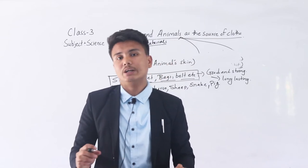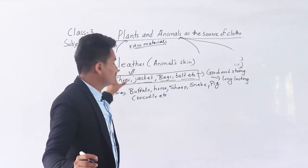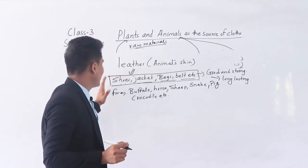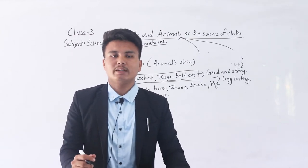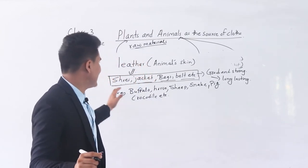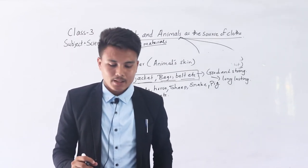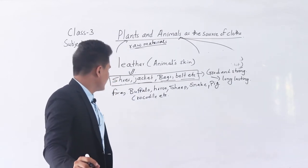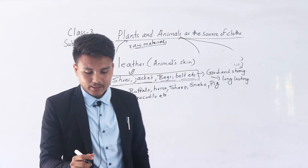Leather has advantages but also disadvantages. Leather shoes, jackets, and belts are very expensive and they are easily subject to wear and tear. Other examples of leather products include suitcases.